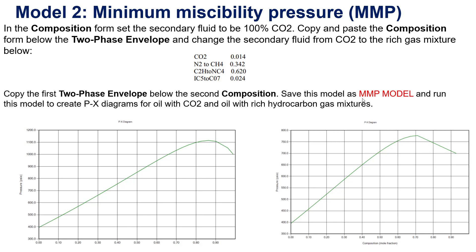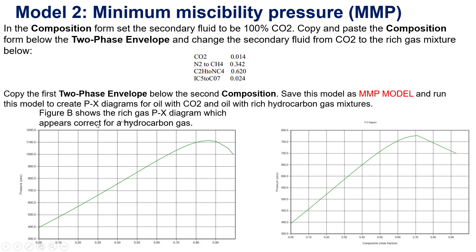After that, you copy the first two-phase envelope below the second composition. Save this model as the MMP model and run this model to create the PT diagram for oil with CO2 and oil with rich hydrocarbon gas mixture. This figure shows the gas PT diagram for hydrocarbon gas, and this figure shows for oil with CO2 only.